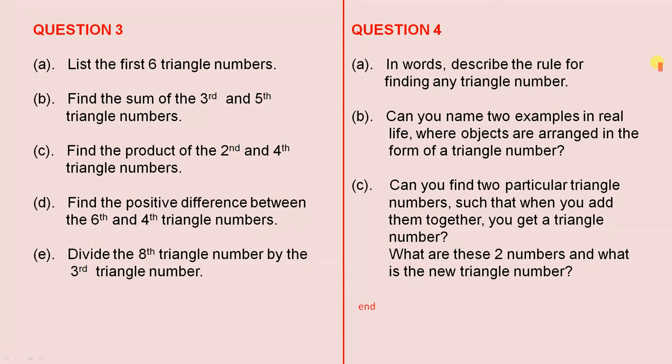Question 4. In words, describe the rule for finding any triangle number. Can you name two examples in real life where objects are arranged in the form of a triangle number? I'll give you a hint — each of these instances represents a game or a sport, but each of them is certainly a type of game.